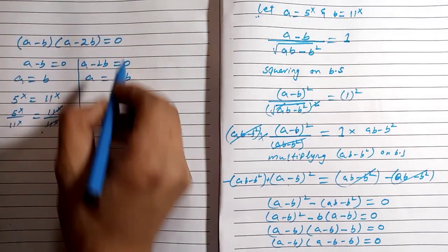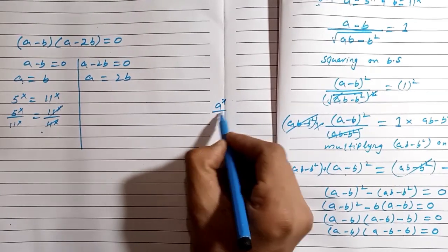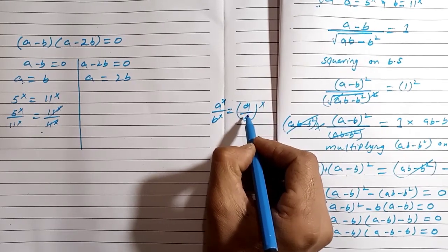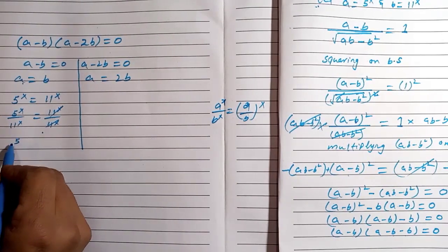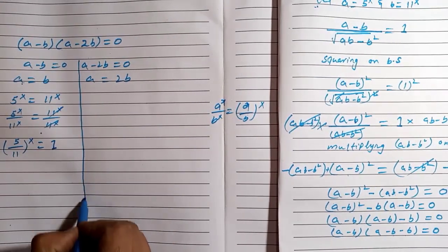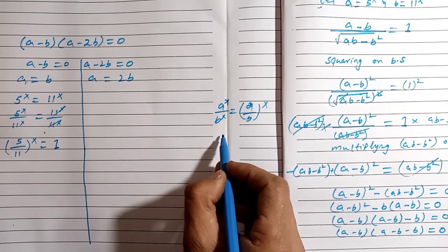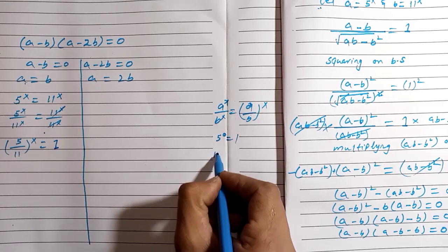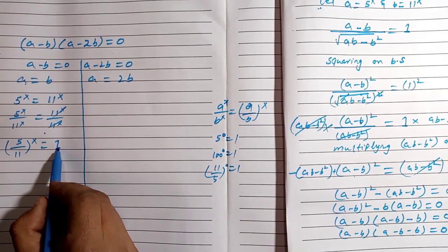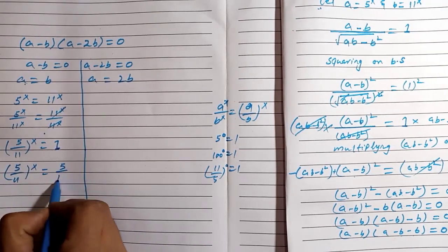We use the rule a^x divided by b^x equals (a/b)^x, so (5/11)^x equals 1. Since any number to the power zero equals 1 — for example 5^0 = 1, 100^0 = 1, and (11/5)^0 = 1 — we write (5/11)^x = (5/11)^0, and using the power rule if a^x = a^y then x = y, we get x = 0.